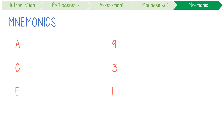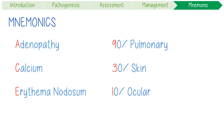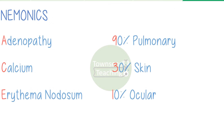A helpful mnemonic is to think of sarcoidosis as a fighter-pilot jet called ACE 931. ACE stands for the classic findings: Adenopathy, Hypercalcemia, and Erythema nodosum — and it also reminds you that ACE levels can be used as a supportive diagnostic test. 90% get pulmonary issues, 30% get skin issues, and 10% get ocular issues.